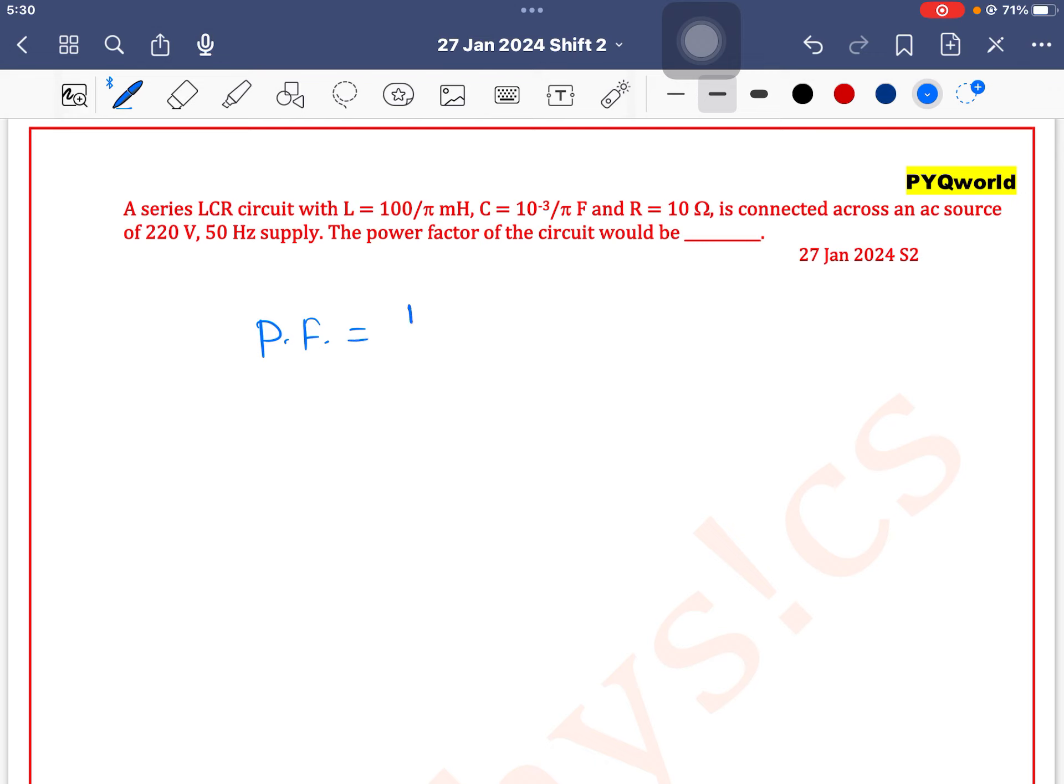We have different formulas of power factor. Power factor equals cos phi which equals R by Z. And what is Z? Z equals under root of R square plus XL minus XC whole square. First, the value of R given here is 10 ohm. Now we will find value of XL and XC.